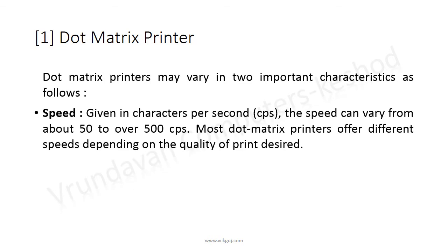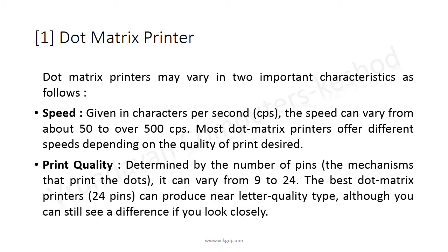Dot matrix printers may vary in two important characteristics. The first is speed, given in characters per second (CPS). The speed can vary from about 50 to over 500 CPS. Most dot matrix printers offer different speeds depending on the quality of print desired.